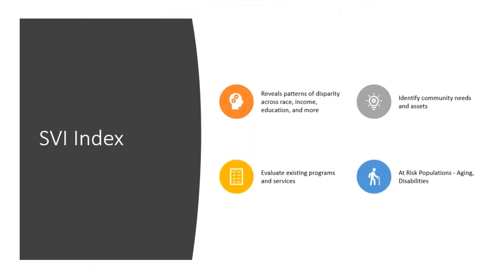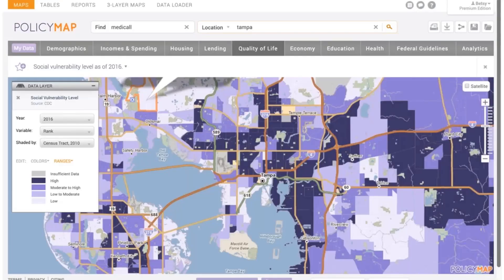The SVI index reveals patterns of disparity across race, income, and education. Looking at Tampa as our example, you can see that the darker areas on the map indicate a higher level of social vulnerability.